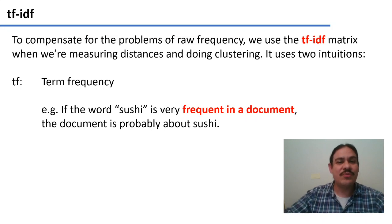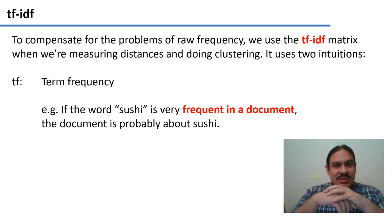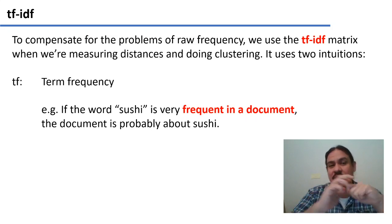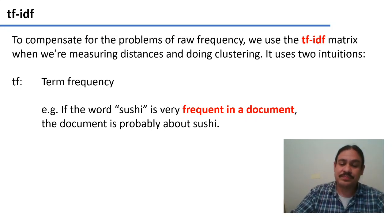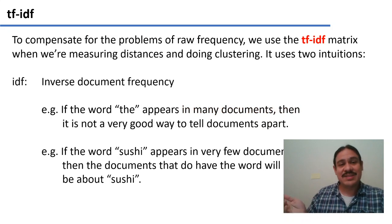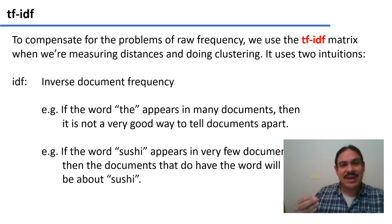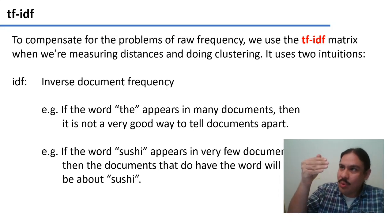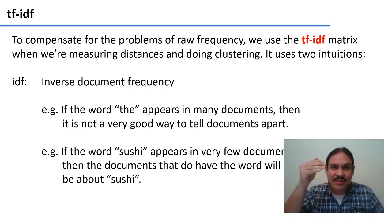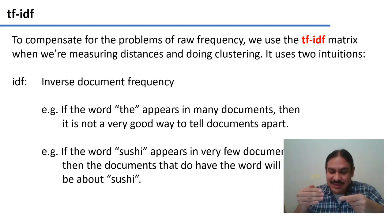The TF means term frequency. For each document, we're going to count the words and see which words are very frequent within that document. So for example, if a given document contains the word 'sushi' a lot, that document is probably about sushi. The other side of this matrix is the inverse document frequency, or IDF. We're going to count how often we see the words in the other documents — more accurately, across all of the documents — and try to figure out how many documents have that word.